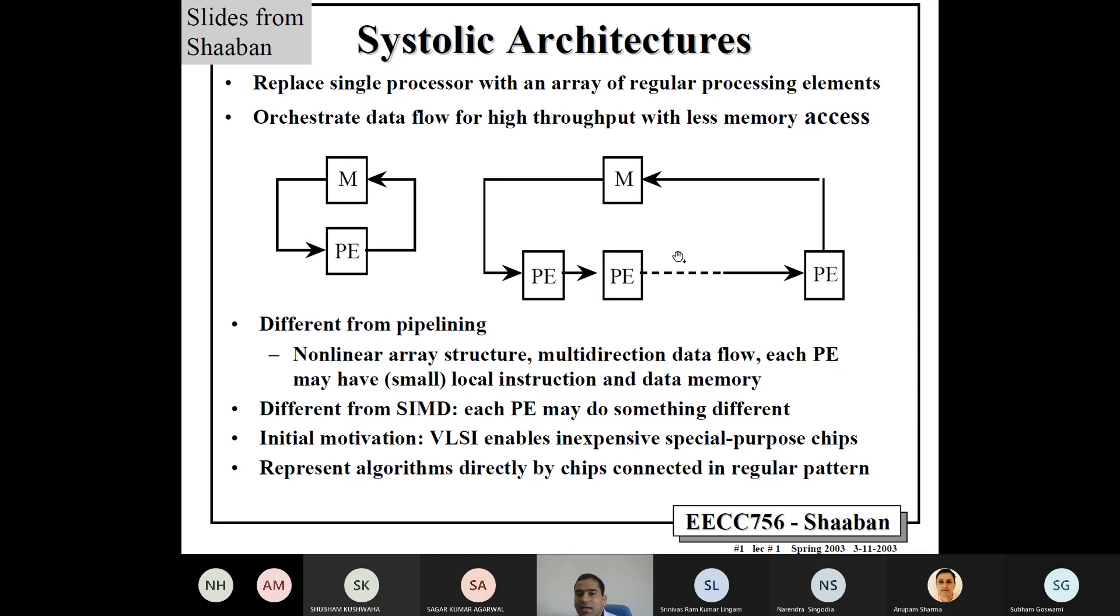Whereas, on the right side, we have a very simple idea of what a systolic array is. Here, we have many processing elements, and every processing element is not directly accessing the memory. For example, in this case, only one processing element is accessing the memory, and whatever data this first processing element accesses, it passes to the next processing element, then to the next processing element, and so on, until the last processing element, where we get the final answer. And of course, this final answer is sent back to the memory. So, the whole idea is, we are increasing the data reuse.